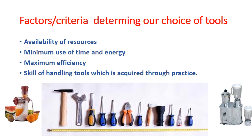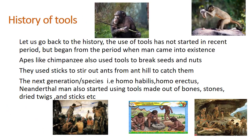History of tools: let us go back to the history of tools. The use of tools has not started in recent times but began from the period when man came into existence. Apes like chimpanzees also use tools to break seeds and nuts; they use sticks to stir out ants from the ant hill to catch them. The next generation of species — homo habilis, homo erectus, and Neanderthal man — also started using tools made out of bones, stones, dry twigs, and sticks.